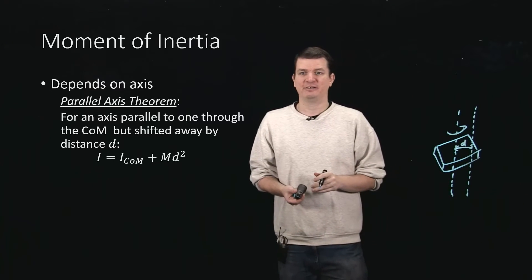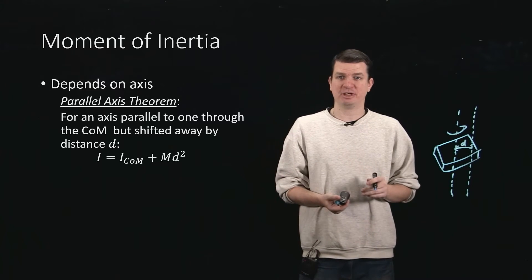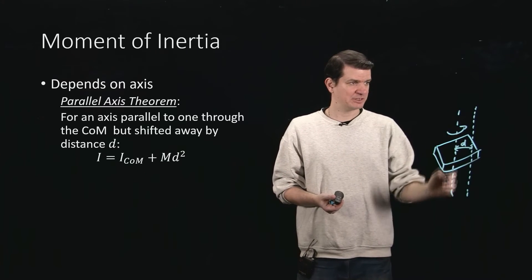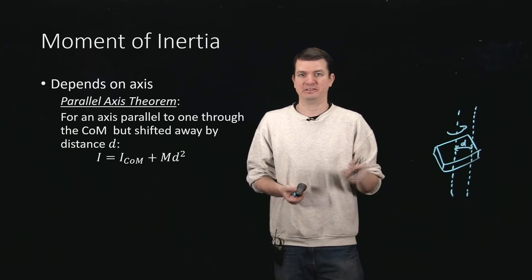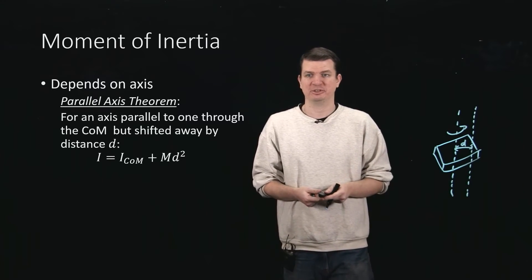Then all I have to do is just add md squared to whatever the moment of inertia was about the axis through the center of mass. That's how this parallel axis theorem works.